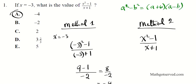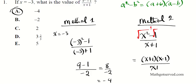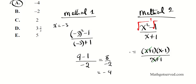This is the difference of squares formula. Let's apply it here. My a squared is x squared and my b squared is 1. So factoring gives us x plus 1 times x minus 1 in the numerator, divided by x plus 1 in the denominator. The x plus 1 cancels out, and you're left with x minus 1.